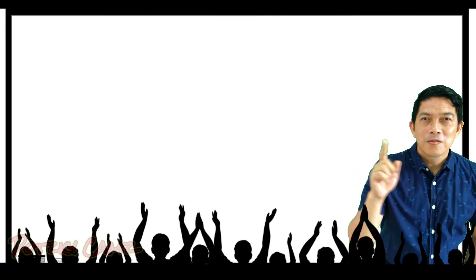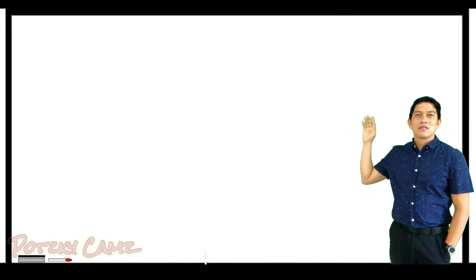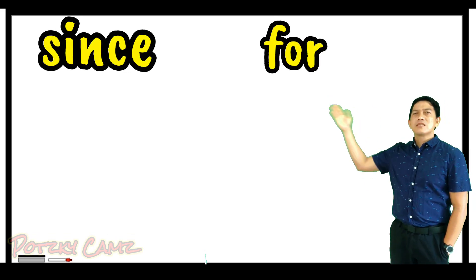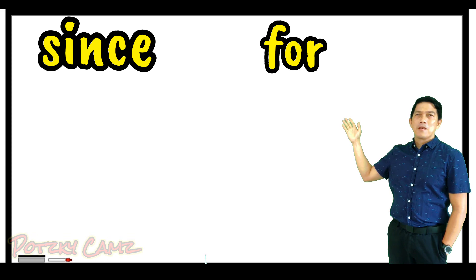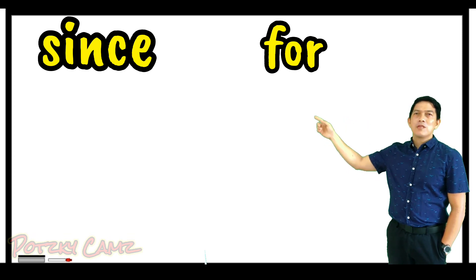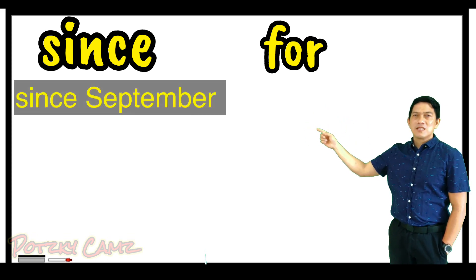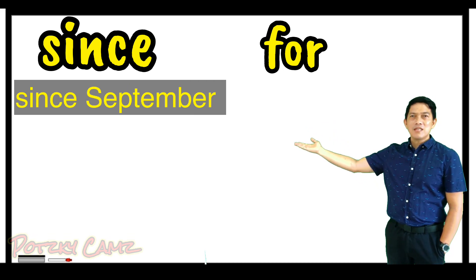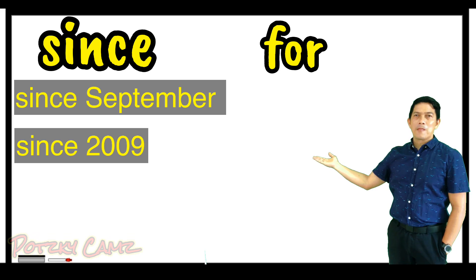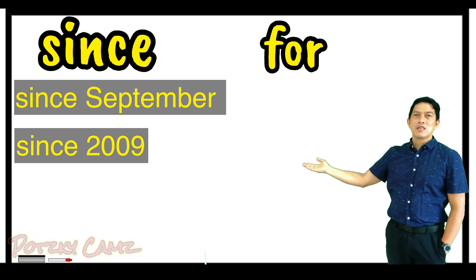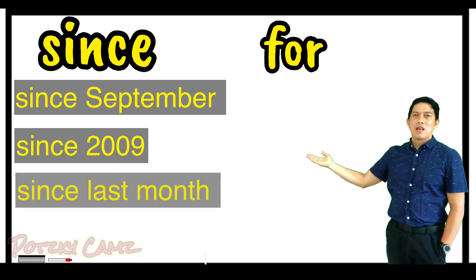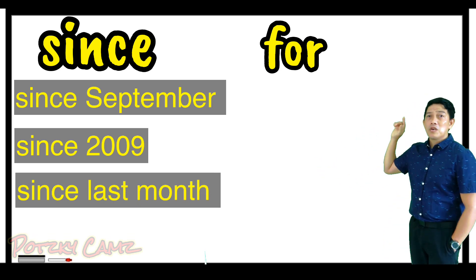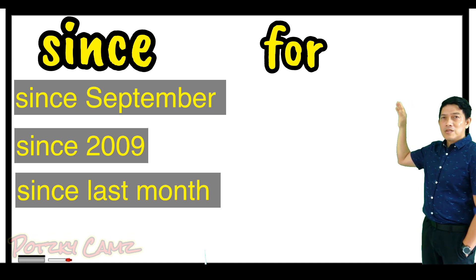Now you can see 'since' and 'for' — how to use 'since' and 'for.' For example: 'since September,' 'since 2009,' 'since last month.' And for 'for,' you can use it with a duration.